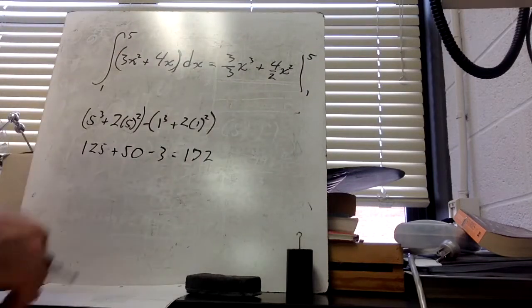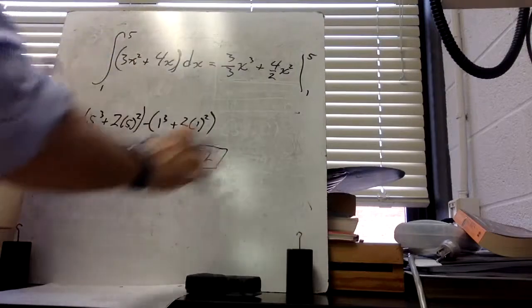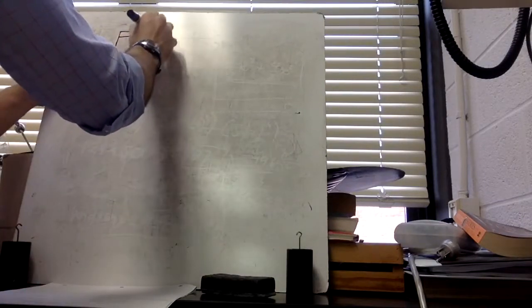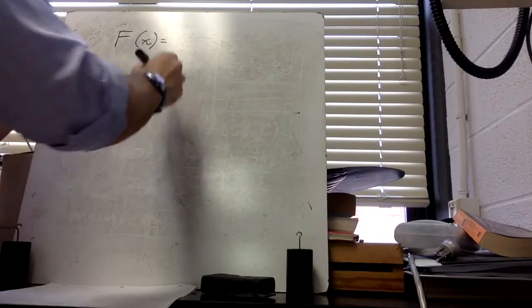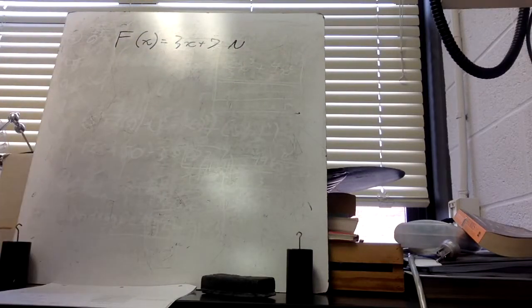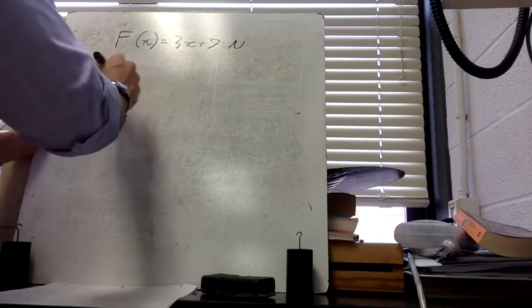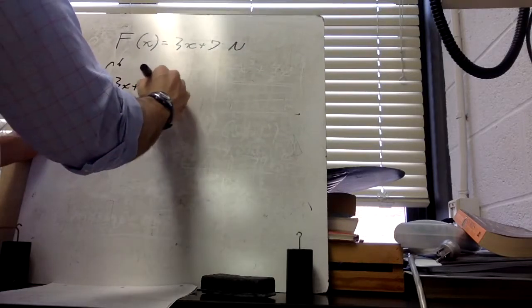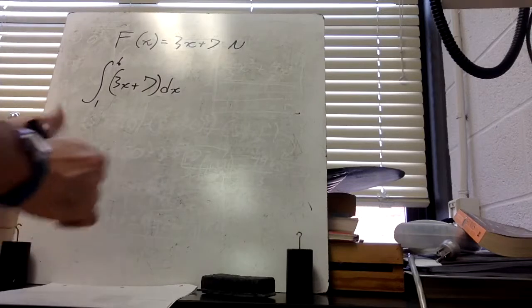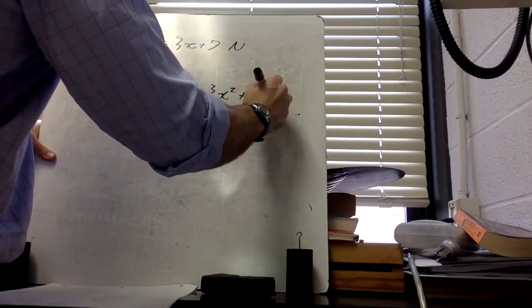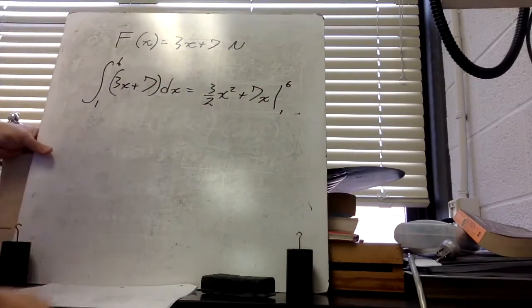Now we do a physics example. The force as a function of position is F(x) = 3x + 7 newtons. How much work is done by this force between x = 1 and x = 6 meters? We take the definite integral from 1 to 6 of (3x + 7) dx. The anti-derivative is (3/2)x² + 7x, evaluated from 1 to 6.